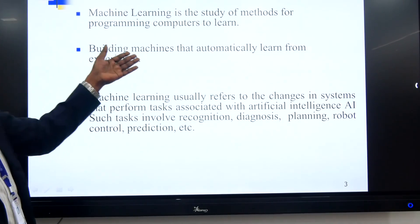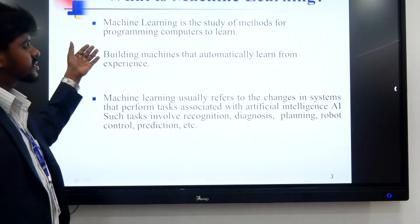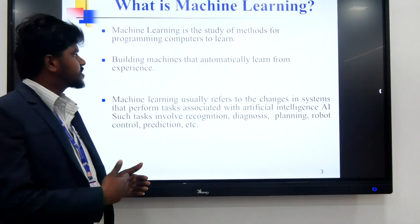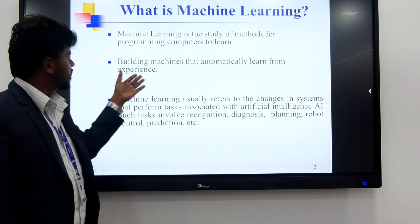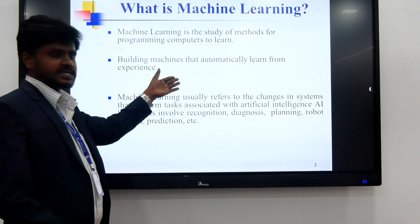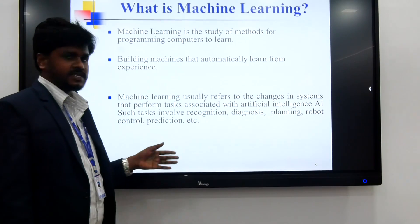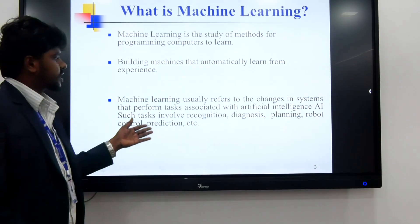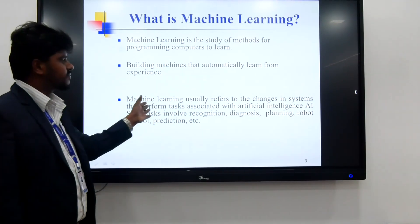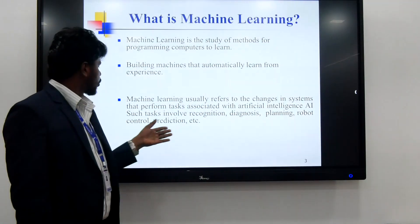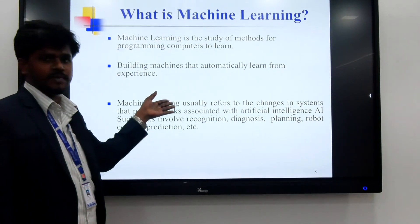Machine learning is supposed to study methods. A study method is a programmer for the computer — knowledge and data instructions are building their machines to automatically learn. Machine learning usually refers to the changes of systems and performance tasks associated with artificial intelligence. AI is important for diagnosis, planning, robots, controls, and prediction.